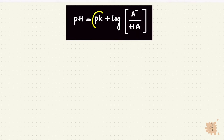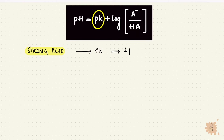The pK is specific to each buffer pair. K is a dissociation constant. For a strong acid, which is more dissociated, there's a higher K and therefore a lower pK. For a weak acid, which is less dissociated, there's a lower K and a higher pK.